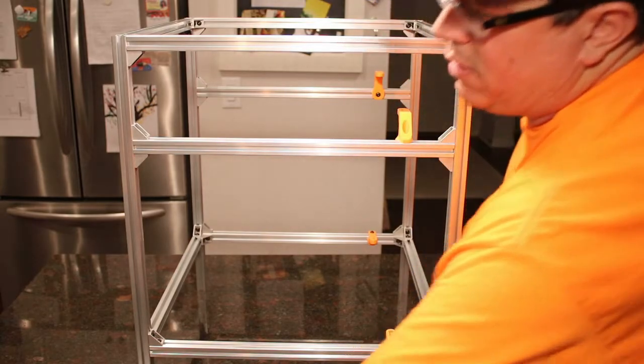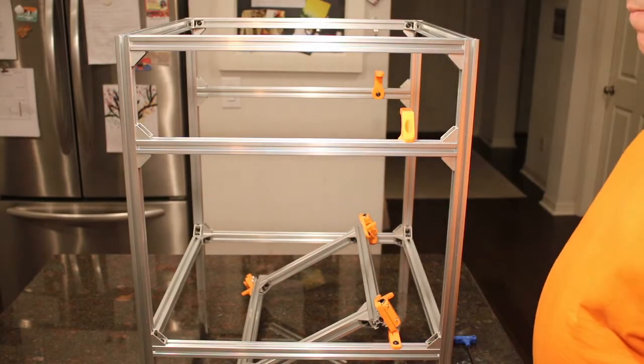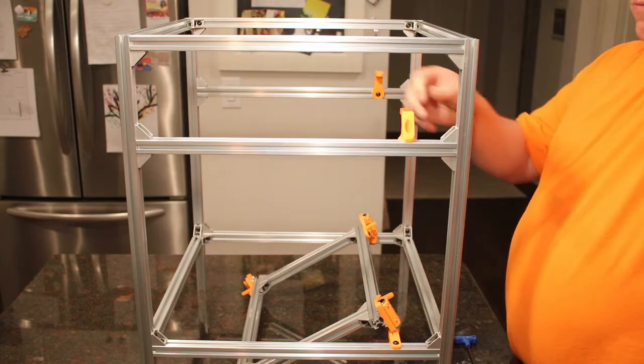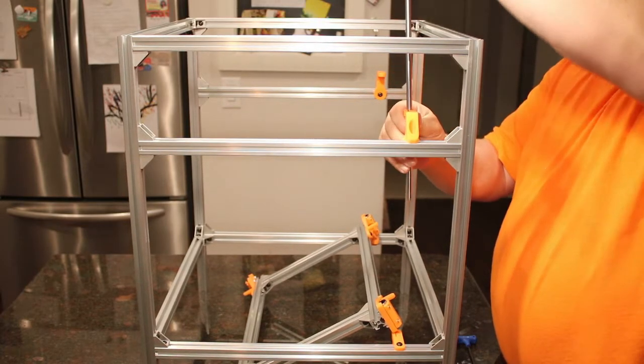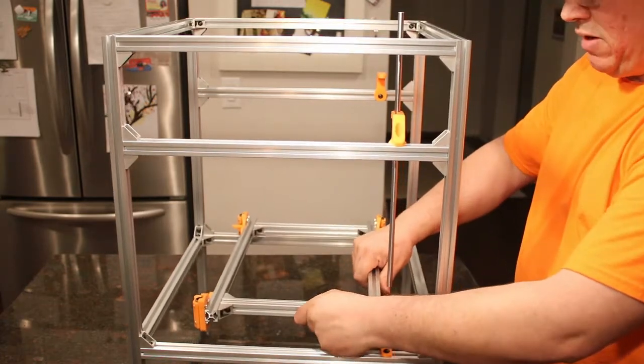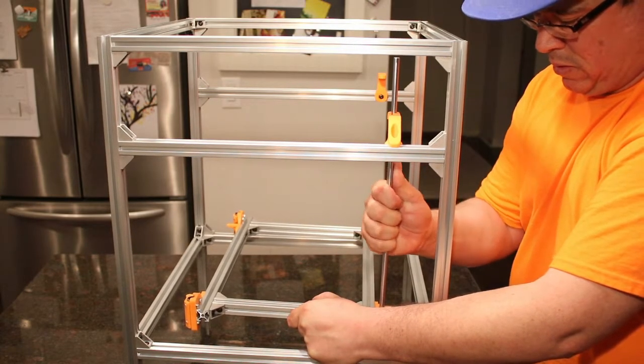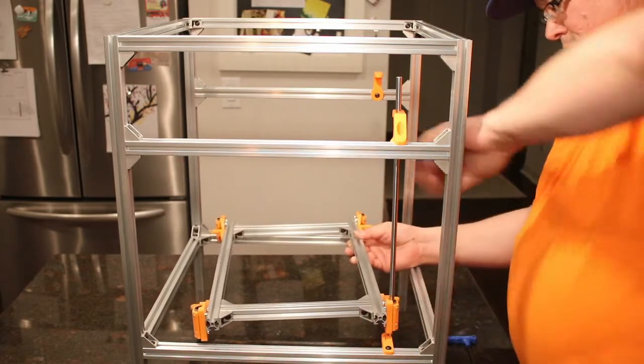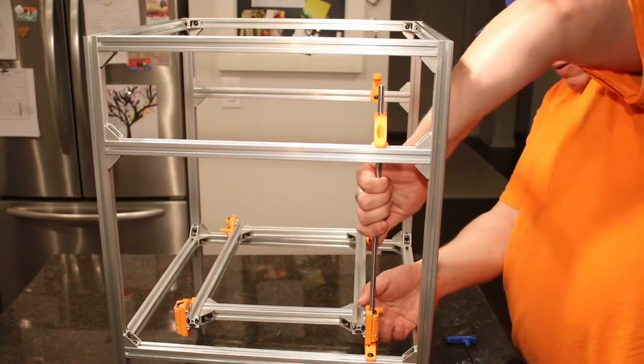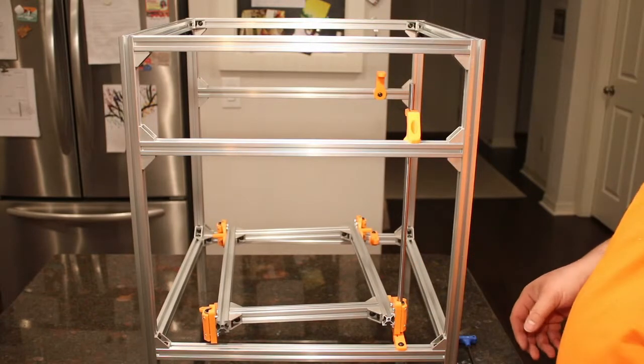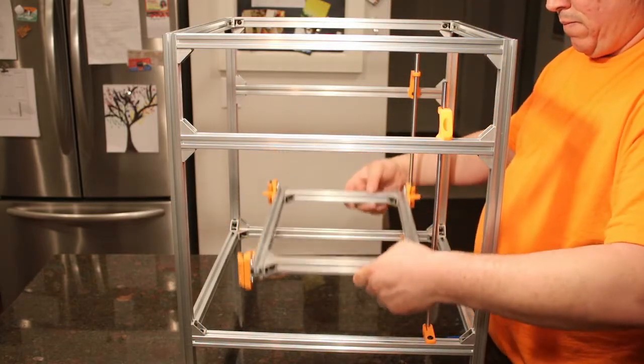Next thing we're going to do is, and this is a little fiddly the first time you do it, but we're going to pass the Z-rods through from the top. Once you've got them through, if you give them a little bit of a rotation, or rotate them a little bit, they'll kind of go through smoothly. And drop them in place all the way down until they go through the lower Z-rod mount. We're going to do the same thing on the other side.